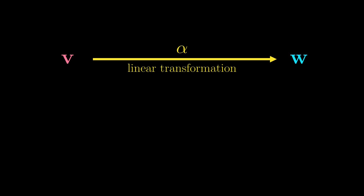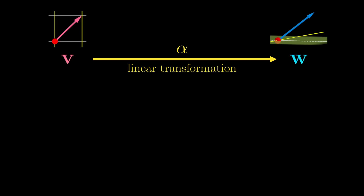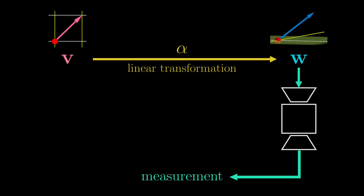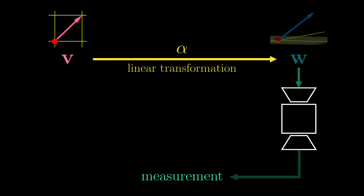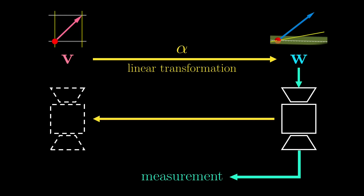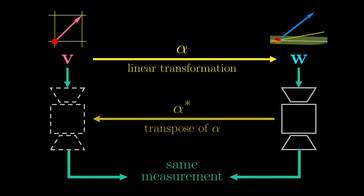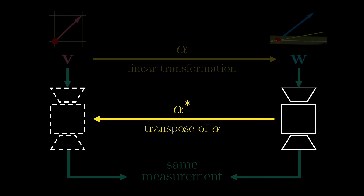Now let's say we have a linear transformation alpha transforming a vector v to another vector w. To emphasize that v and w can be very different, let's say v is a two-dimensional vector and w could be a three-dimensional one. For some reason you want to measure w. A silly analogy: you want to measure your own weight, but you don't have a bathroom scale and have to use your neighbor's. One way is to go to your neighbor's house and take the measurement there directly. But you could also just call the neighbor to lend you the scale, so you can take the measurement at home and get the same answer. The scale being moved from the neighbor's house to yours is the transpose of alpha.